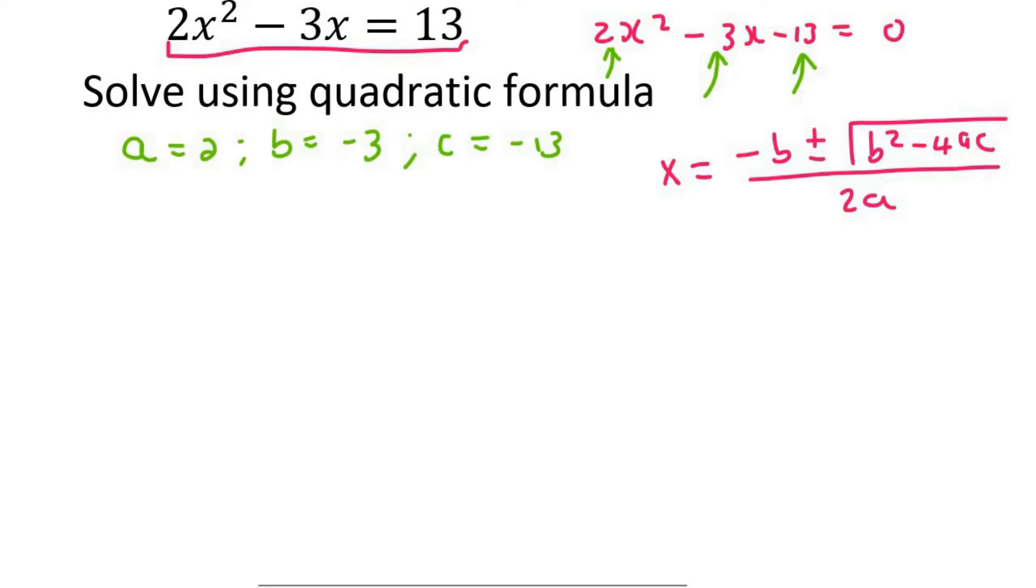Then you literally just type that into the formula, but let me show you what it would look like. So be careful here. There's a minus, so we put a minus, then a bracket, and then b is -3.